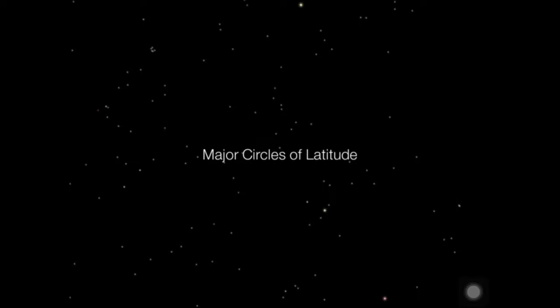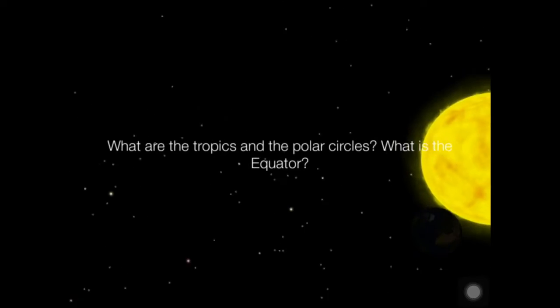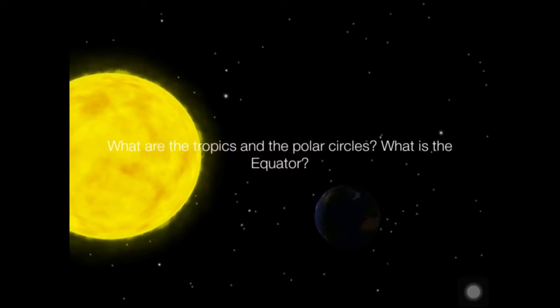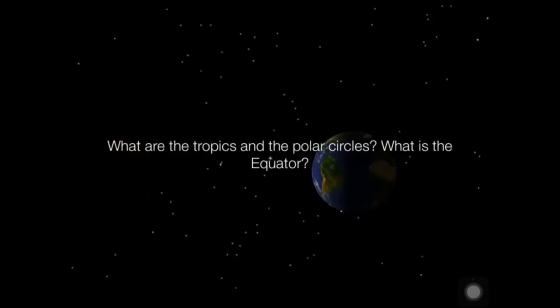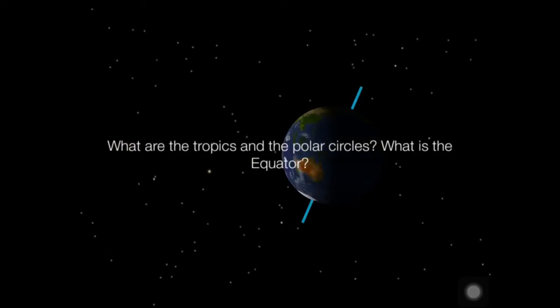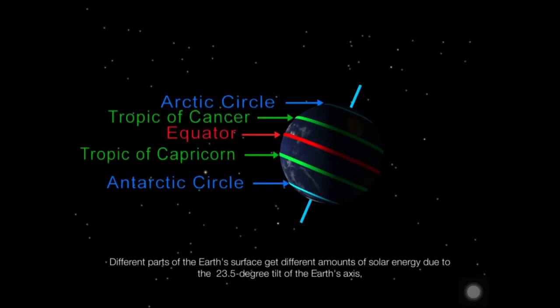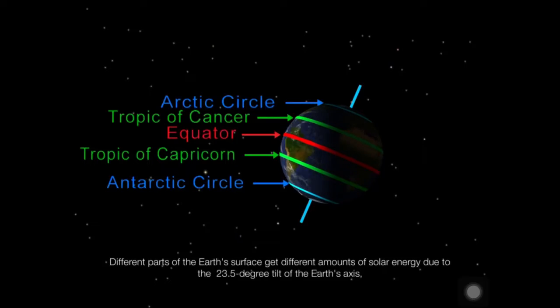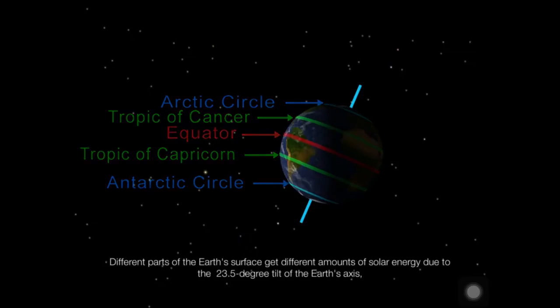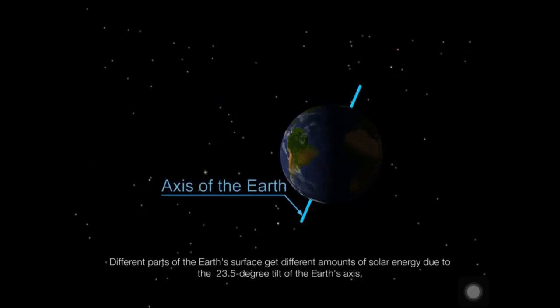Major circles of latitude: What are the tropics and the polar circles? What is the equator? Different parts of the Earth's surface get different amounts of solar energy due to the 23.5 degree tilt of the Earth's axis.